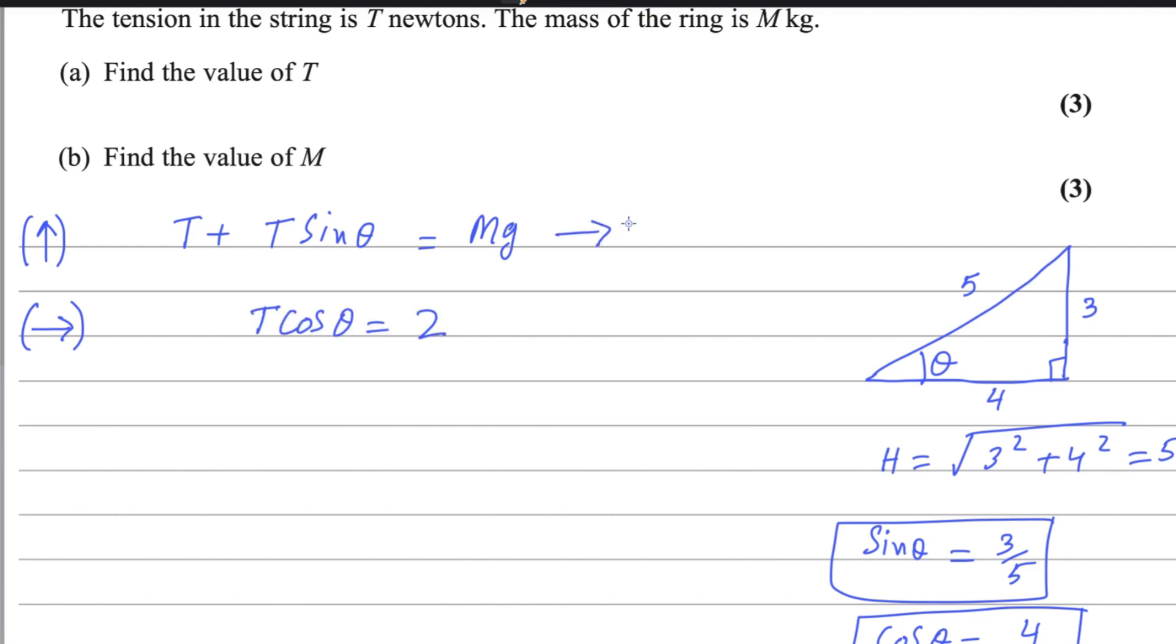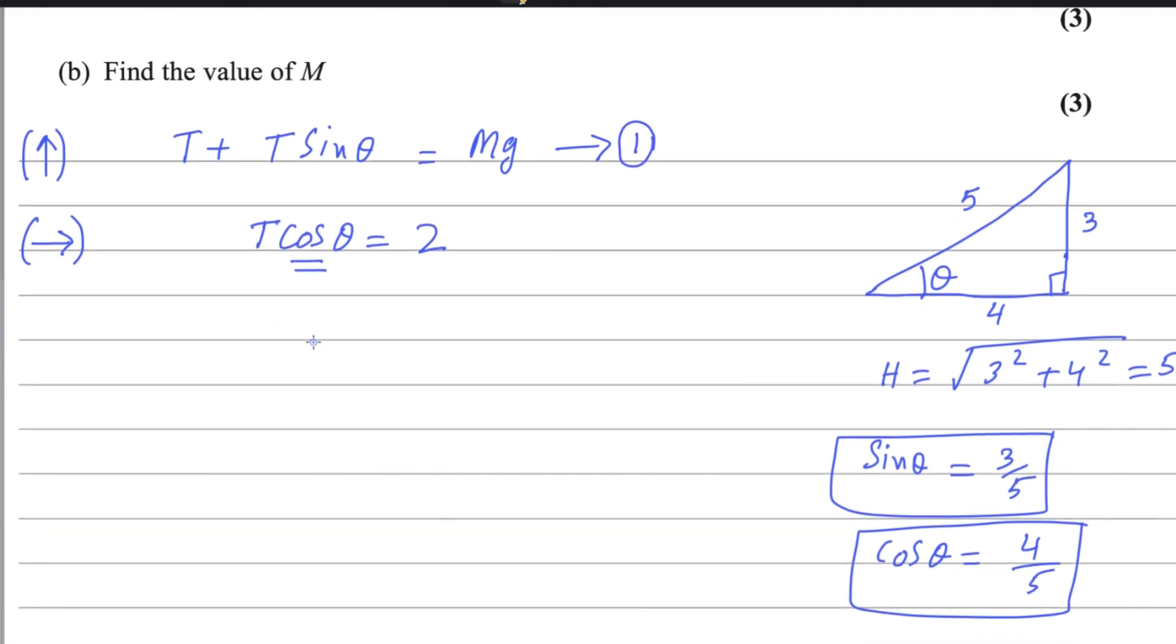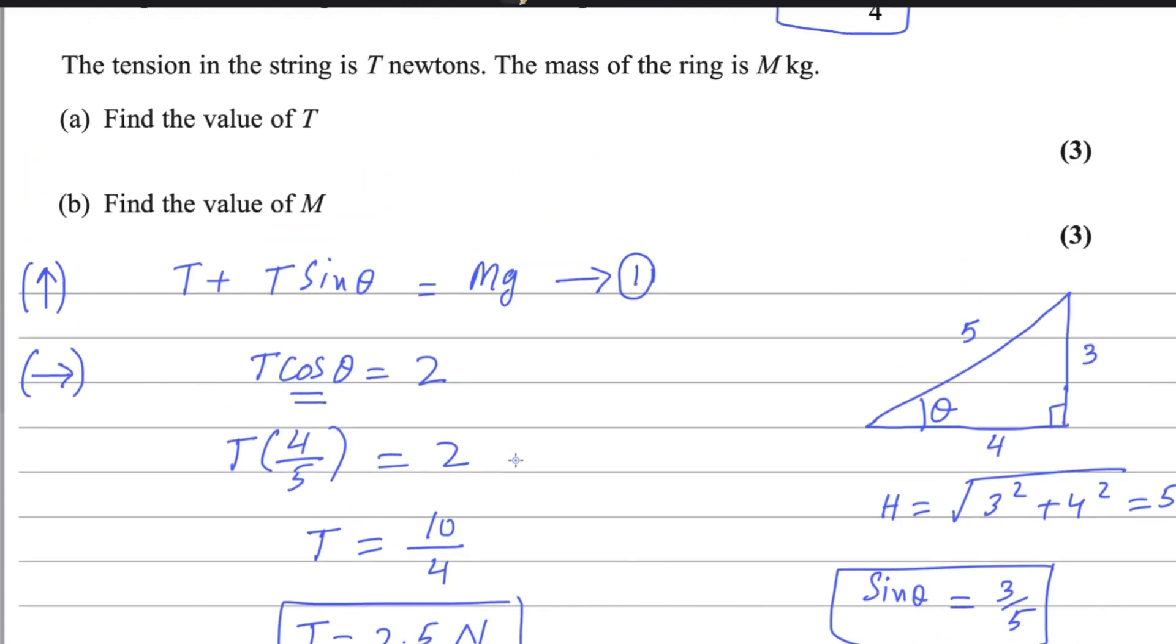These are two equations. This is equation number 1. The value of cosine theta is given there, this will help us. T cosine theta, substitute the value of cosine theta 4 over 5, equals 2. So T equals 5 will multiply here, it will be 10, 10 divided by 4. The answer of T equals 2.5 Newton. This is the answer for first part.